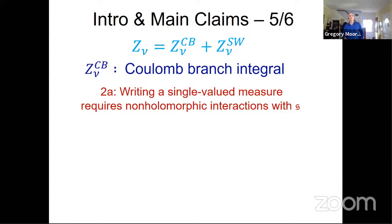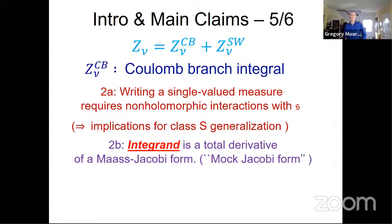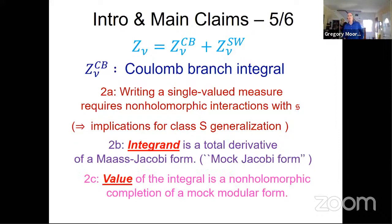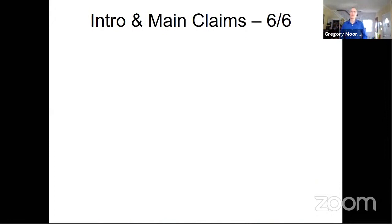Those non-holomorphic interactions have important implications for class S generalizations of Donaldson theory. When you do that, the integrand is a total derivative of what I'd like to call a mock-Jacobi form — except Dabholkar, Murthy, and Zagier have already defined a mock-Jacobi form meaning something slightly different, so I'll call it a mock-Jacobi form. The value of the integral is a mock-modular form as a function of tau naught, and in this way we recover, for example, the Vafa-Witten expression for CP2 as a special case.